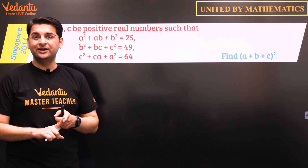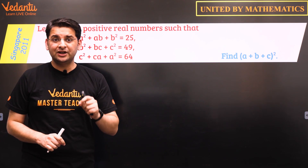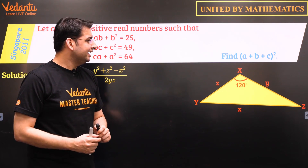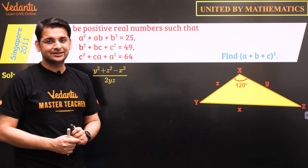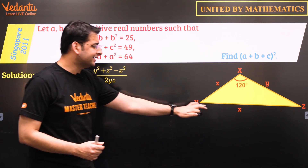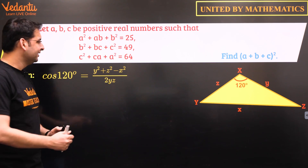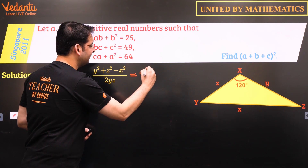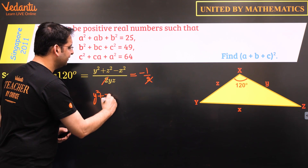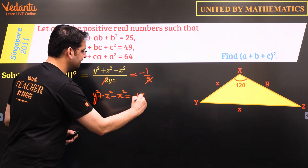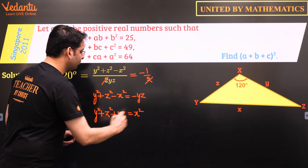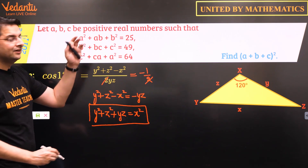So how do we involve geometry in this question? We make use of the fact that A²+AB+B²=25. By the cosine rule, if a triangle has sides y and z with included angle 120°, then cosine(120°) equals (y²+z²−x²)/(2yz) = −1/2. Simplifying, y²+z²−x² = −yz, which gives y²+z²+yz = x². So this expression matches the left-hand side of our three given equations.